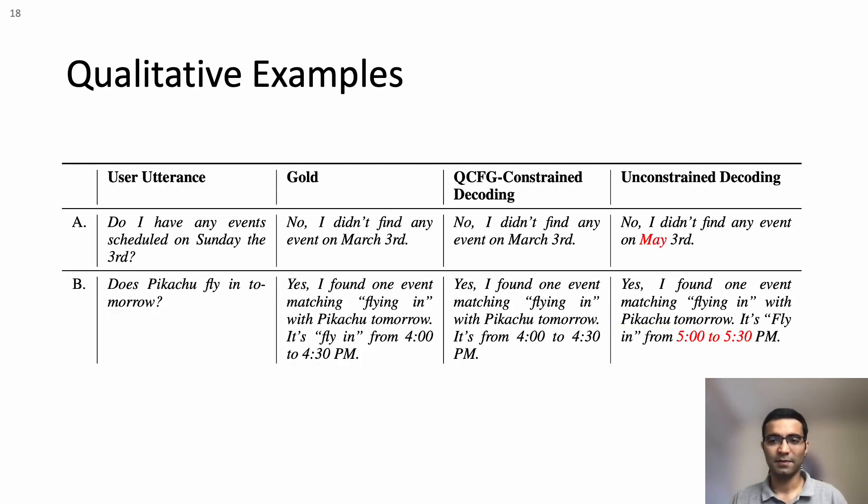A couple of qualitative examples showing outputs from the fine-tuned seq-to-seq model under QCFG constraint decoding versus unconstrained decoding. As you can see, unconstrained decoding often leads to incorrect outputs.